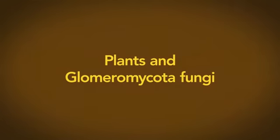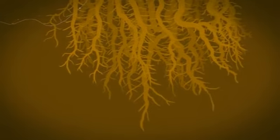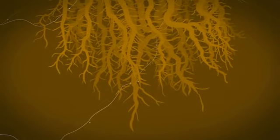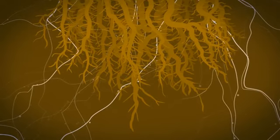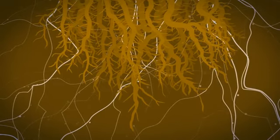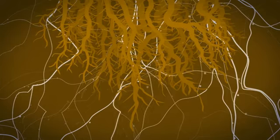Web-like strands of glomeromycota fungi thread their way through soils around the world. When they meet a plant root, they tunnel in and start sucking out sugars. But far from harming them, the fungi supply the plants with vital nutrients, including phosphates and minerals, natural fertilizers.